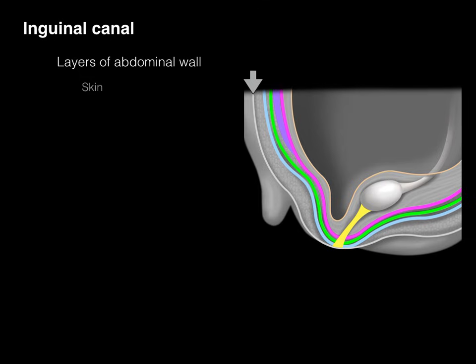The most superficial layer of the abdominal wall is the skin — epidermis and dermis. Next is the hypodermis, which is the Camper's fascia, primarily fat, and some of that Scarpa's fascia — that deeper, more fibrous connective tissue that makes up the hypodermis.